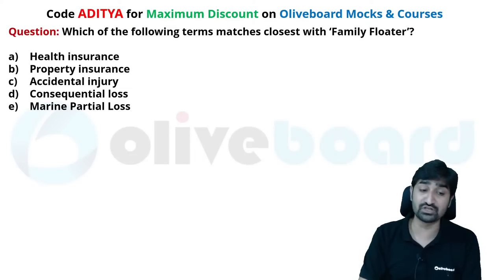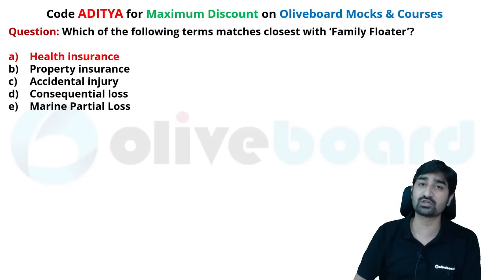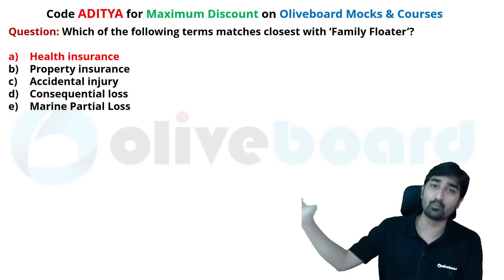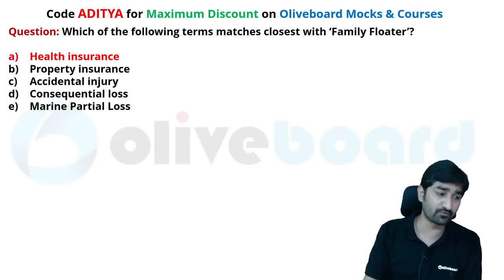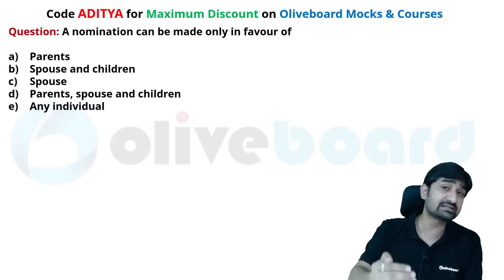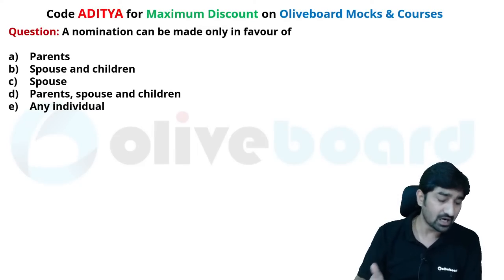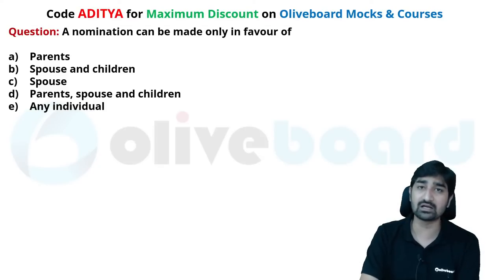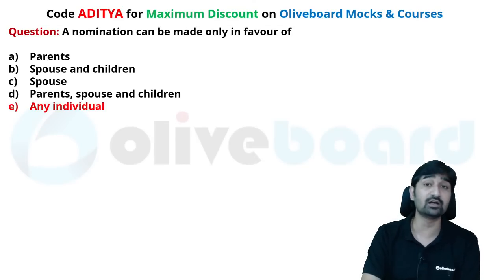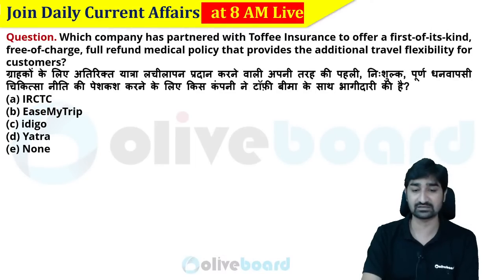The family floater term is associated with health insurance. If you want to take health insurance for your complete family where all family members are covered under one plan, that is called a family floater. A nomination can be made in favor of anyone — parents, spouse, children, or any individual. There is no blood relation required. The nominee of an insurance policy can be anyone.